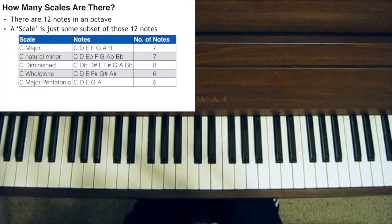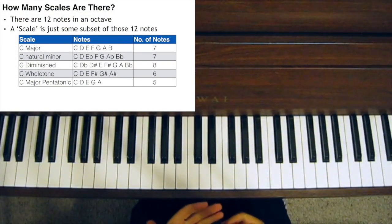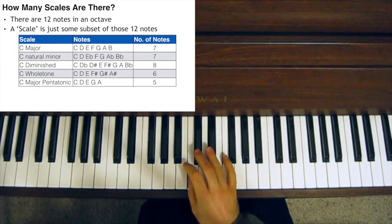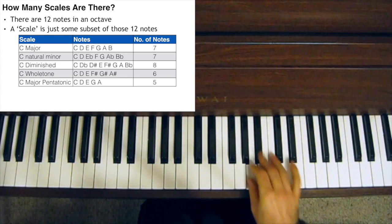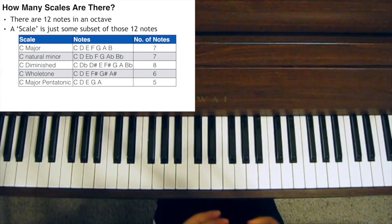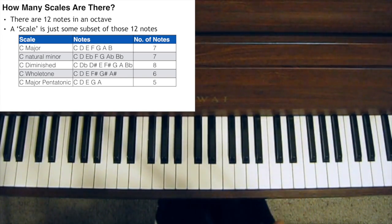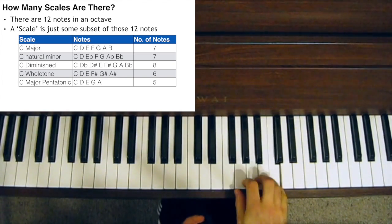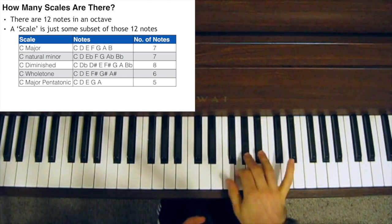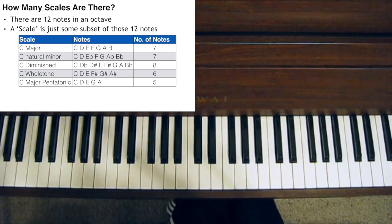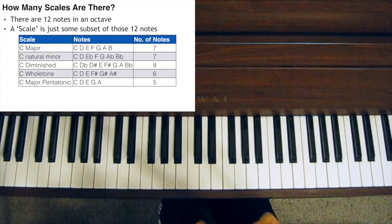So I thought I'd do a bit of maths today. In Western music, we have 12 notes in an octave, and a scale is just some subset of those 12 notes. We all know that the major scale and the minor scale have seven notes each, but there's no reason why a scale need only have seven notes.